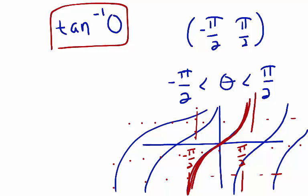We're looking for the angle theta between our restricted values where tangent is equal to 0. The only angle within our interval for which this condition holds true is angle 0. Therefore, tan inverse of 0 is equal to 0.